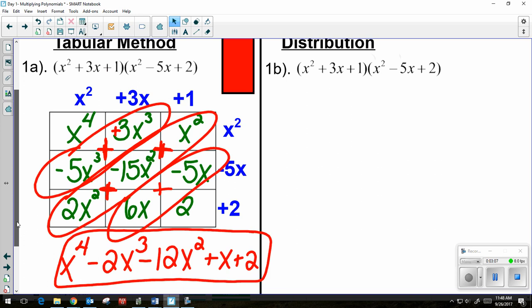So now I'm going to look at the same problem, except instead of using the box method or the tabular method, I am going to distribute. You might be familiar with this for foiling or double distributing. But in this case, I have to do three distributions.